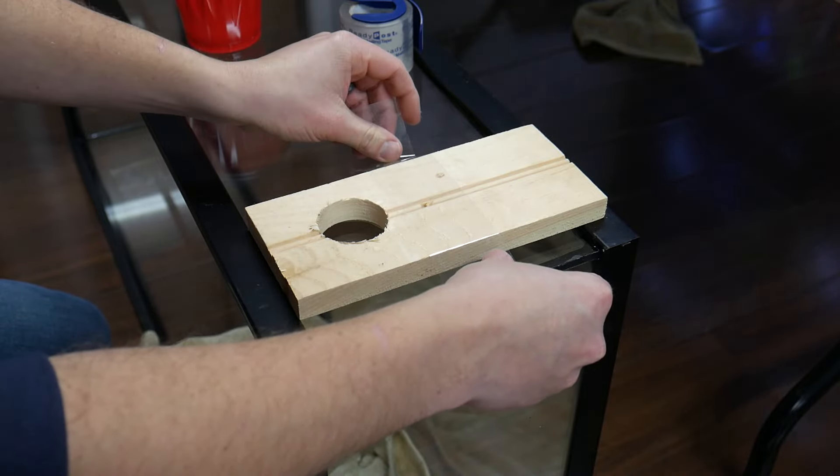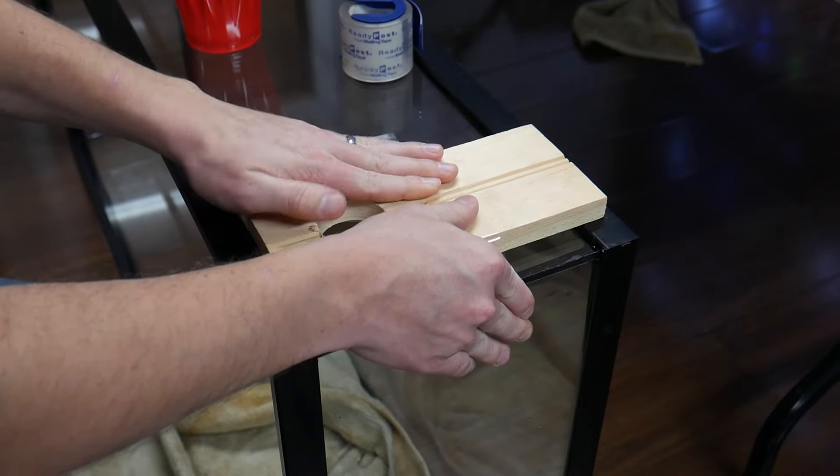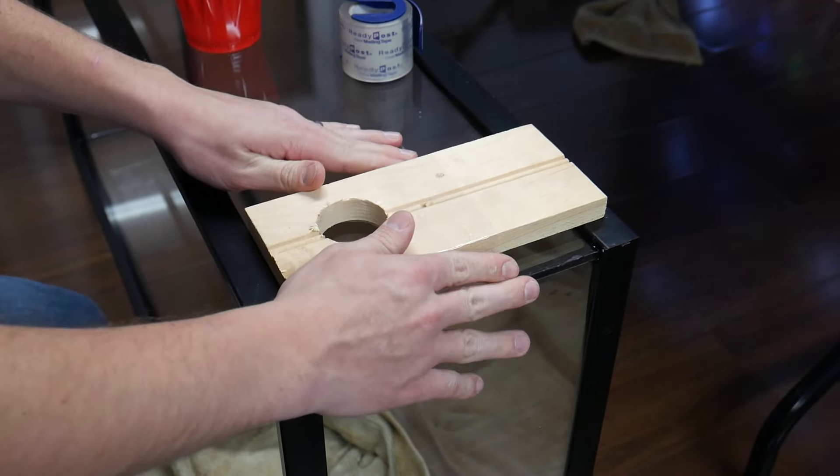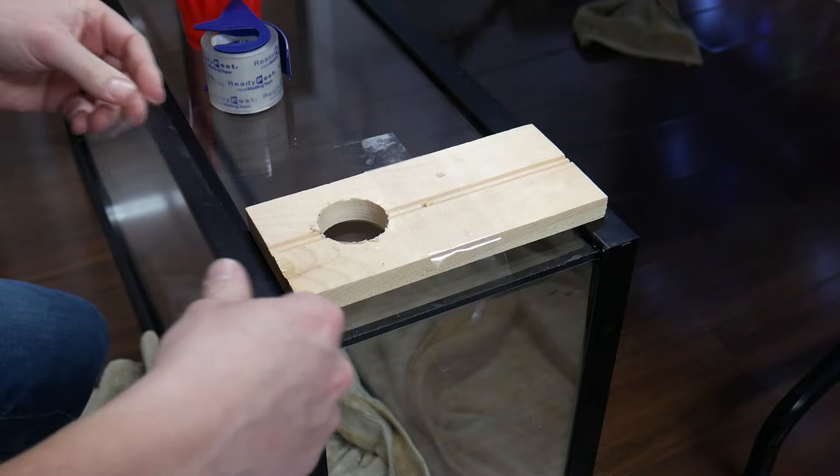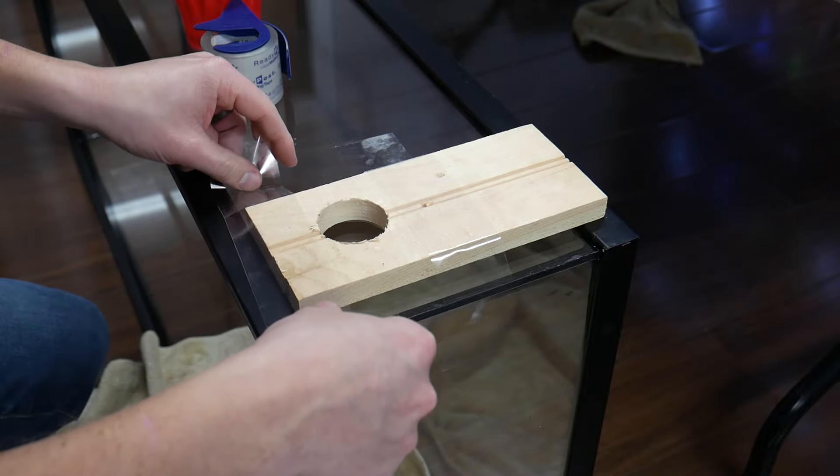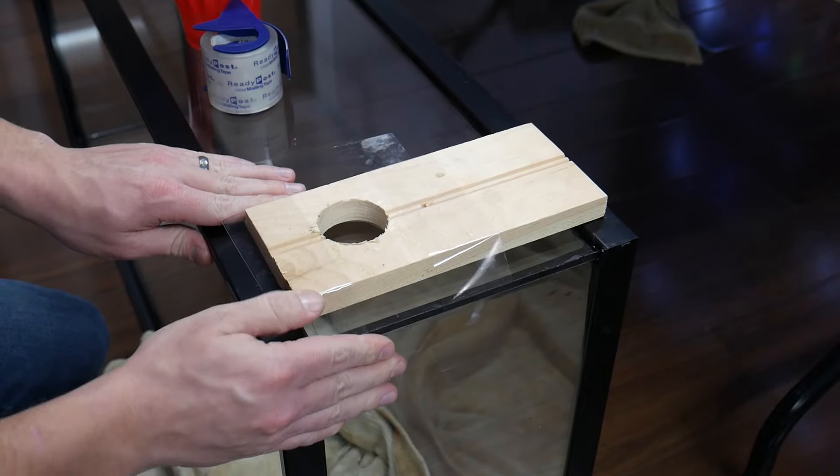Once we have the template in the place that we want it, we're also going to use some of our tape here to just tape it into place a little more to help us just keep this template where we want it. You could use packing tape, you could use duct tape, it doesn't really matter. This wooden template is kind of sitting up a little bit, it's a little bit elevated off the glass because that plumber putty ring is sitting underneath it.